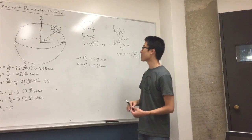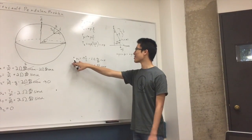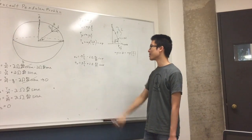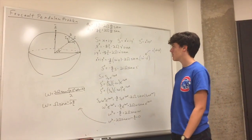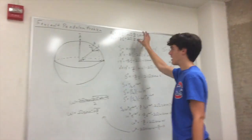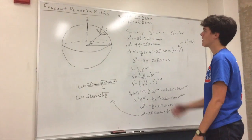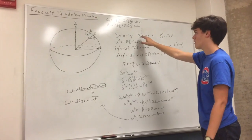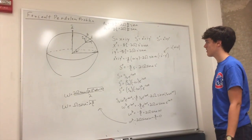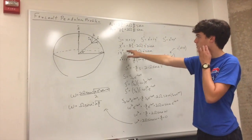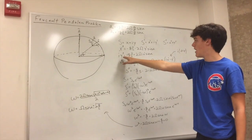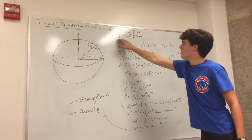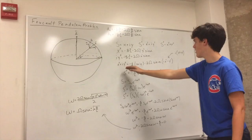The issue with trying to solve these equations is that we have the acceleration in the x direction depending on the velocity in the y direction, and the acceleration in the y direction depending on the velocity in the x direction. So now we're going to approach solving these two coupled equations by transferring into the complex plane. We're going to define s equals x plus iy, so s prime equals that and s double prime accordingly. First we add x double prime plus i times y double prime — you multiply the second equation by i and add them together.